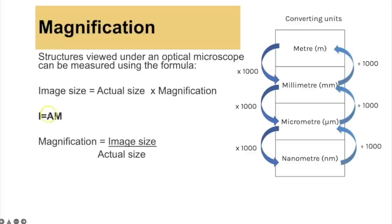You could be asked to calculate magnification. The formula to remember is I = A × M: image size equals actual size times magnification. You can rearrange this to find actual size or magnification. Crucially, the image size and actual size must be in the same units. You need to be familiar with converting between millimetres and micrometres, as these are the most common conversions in magnification questions.